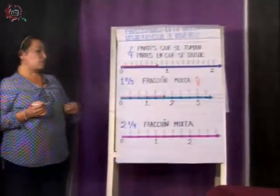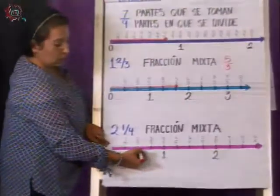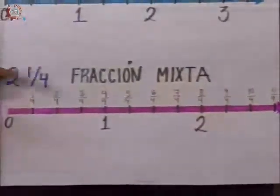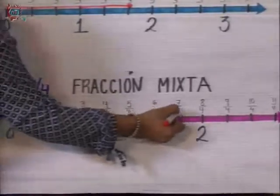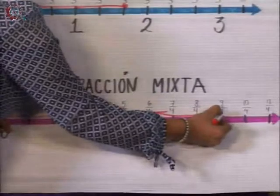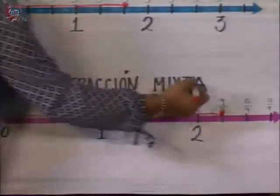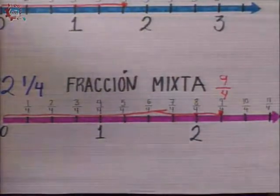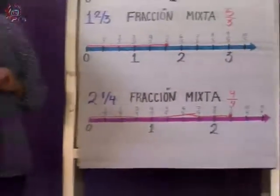Otro ejemplo: dos enteros un cuarto. Procedo igual, divido en cuatro partes cada unidad. ¿Cuántos enteros voy a tomar? Dos. Entonces, directamente tomo dos enteros y un cuarto más. Esta fracción mixta dos enteros un cuarto va a ser también igual a nueve cuartos. Esa es la forma en que nosotros podemos ubicar una fracción en una recta numérica.